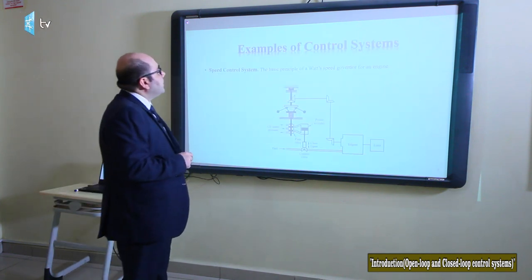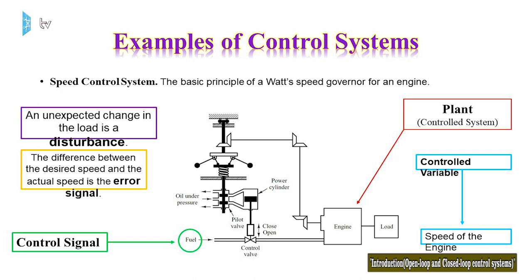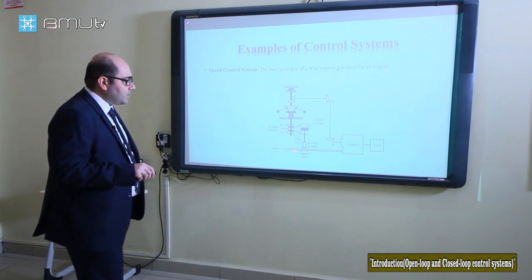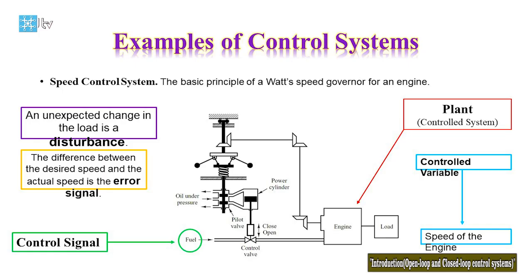Let's talk about an example of a control system: the speed control system, based on the basic principle of Watt's speed governor. We have an engine, and the aim of this control system is to adjust and control the speed of the engine. The amount of fuel admitted to the engine is adjusted according to the difference between the actual speed and the desired value.